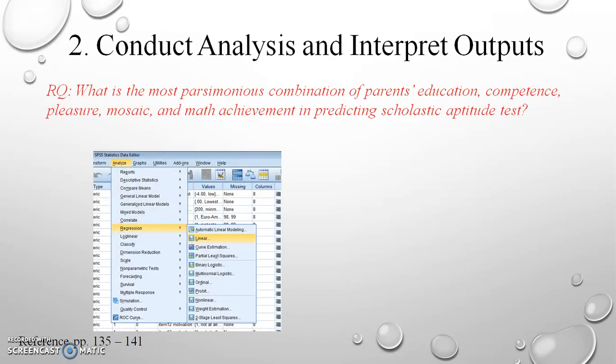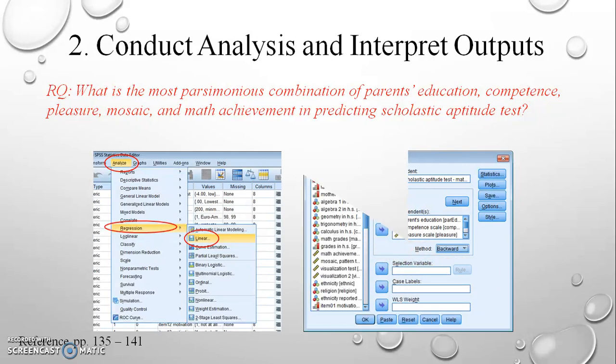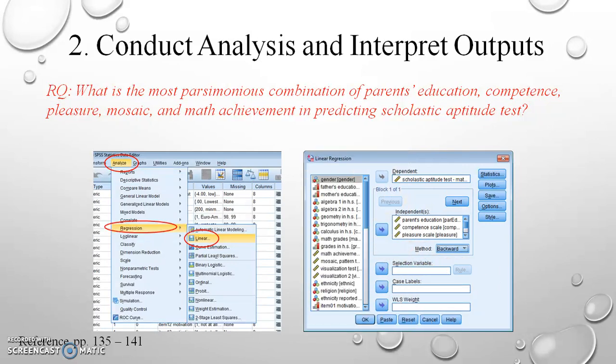Now we are ready to conduct our analysis. We continue working within our HSB data file. In the menu bar we click Analyze, Regression, then Linear. The linear regression dialog box opens. The dependent and independent variables should already be in their assigned boxes. What we want to pay attention to this time is the method field — click the dropdown menu and select Backward.